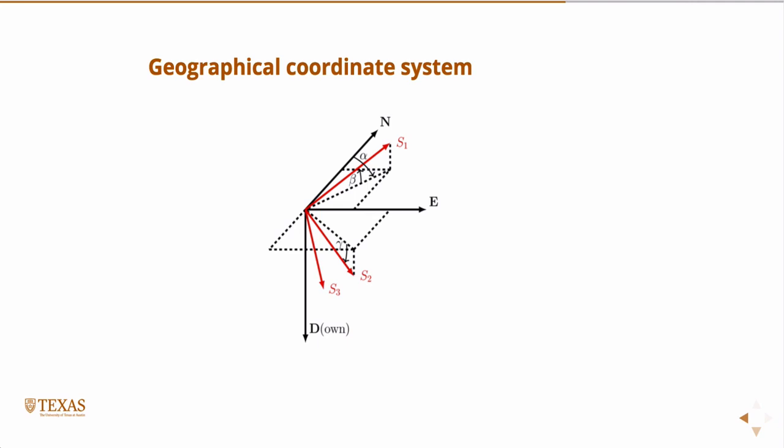Now imagine they're all zero again, so they're superimposed on one another. Now let's rotate beta in isolation. If I rotate beta in isolation, the rotation's going to be about the east axis. So I'm going to look down the east axis and we'll have north and down and S1 and S3.